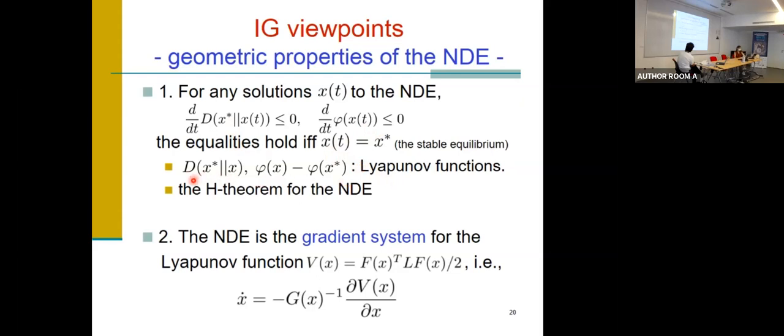So the implication of this result: these quantities can also be regarded as another Lyapunov function for this dynamical system and this is also regarded as a H-theorem in statistical physics. And the second result is that NDE network diffusion equation is a gradient system for the divergence function which is used in the analysis of convergence rate.